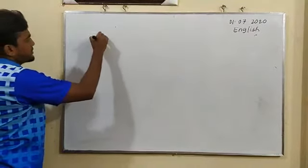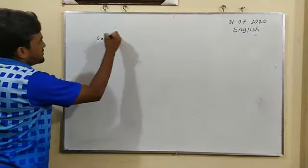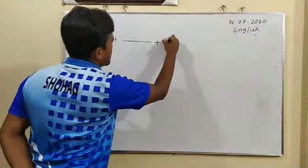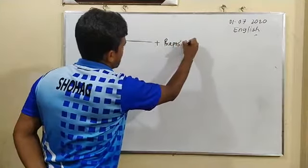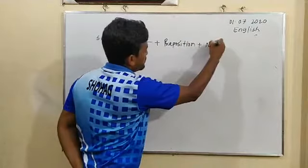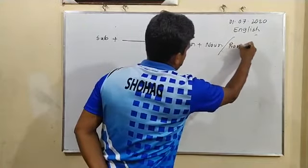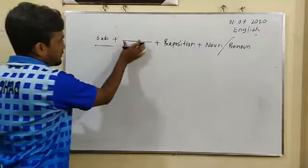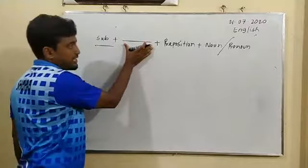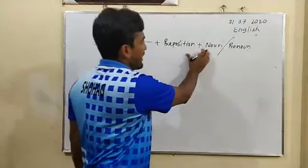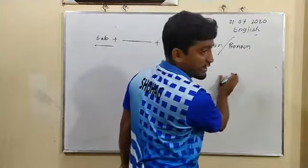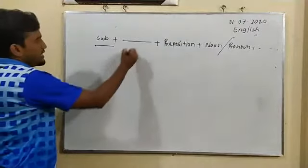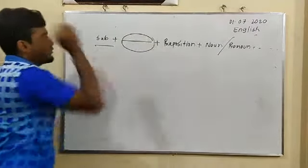Next rule: if you find subject plus gap plus preposition plus noun or pronoun — subject plus gap plus preposition plus noun or pronoun or anyone plus others — then we will apply the adjective form.